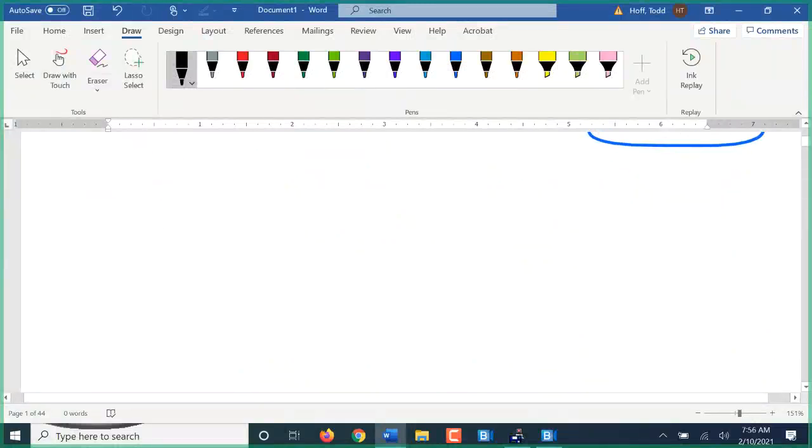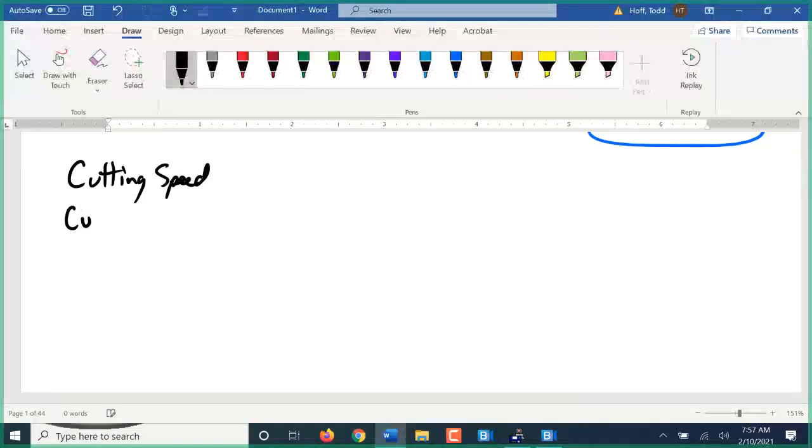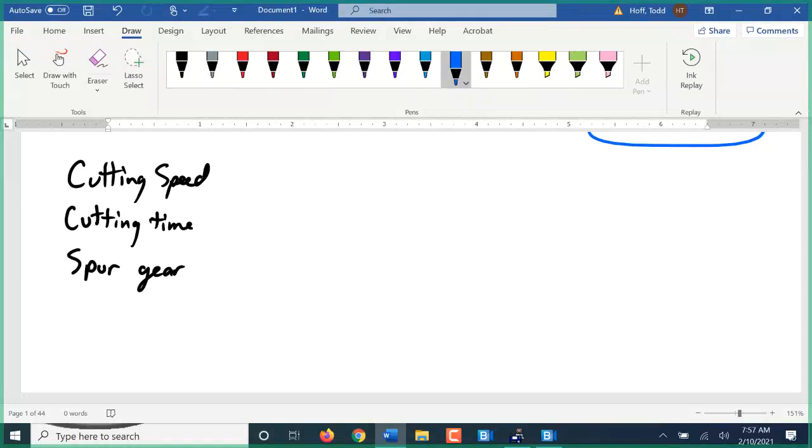For the test that's coming up tomorrow, which I believe I've already got it posted on Blackboard, you need to know your cutting speed formulas, your cutting time formulas, how to use them together if necessary. If I give you the type of tool, the type of material, what your surface cutting speed is, you need to be able to calculate your RPMs, and then use those RPMs to calculate how long it would take to cut at the feed rate. Then of course, all these spur gear formulas.